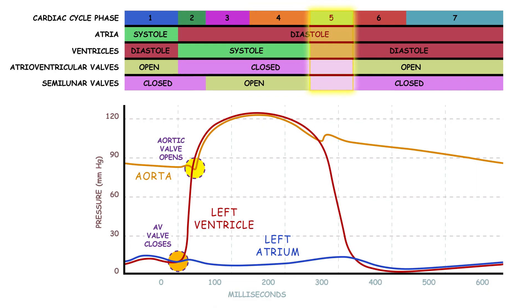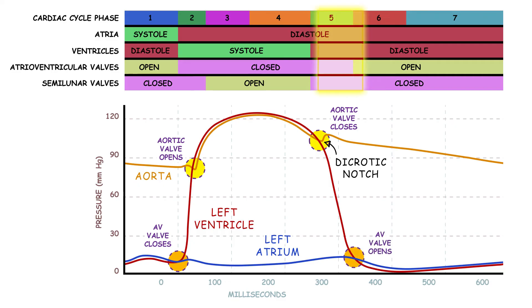During isovolumetric relaxation, pressure decreases in the ventricles as they relax. Aortic pressure exceeds left ventricle pressure and the semilunar valves close. Blood starts to flow back to the heart, which causes a dip in aortic pressure called the dicrotic notch. Blood volume in the ventricles remains the same until pressure in the ventricles is less than that in the atria. Once atrial pressure exceeds ventricular pressure, the atrioventricular valves open and we get rapid ventricular filling.